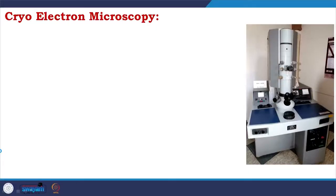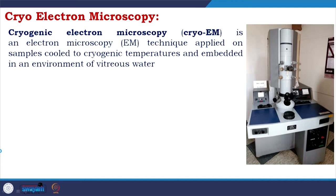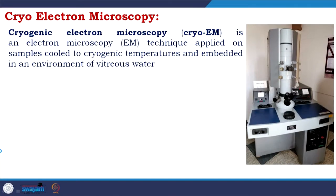Cryo electron microscopy, or cryogenic electron microscopy — in short, cryo-EM — is an electron microscopy technique applied on samples cooled to cryogenic temperatures and embedded in an environment of vitreous water.